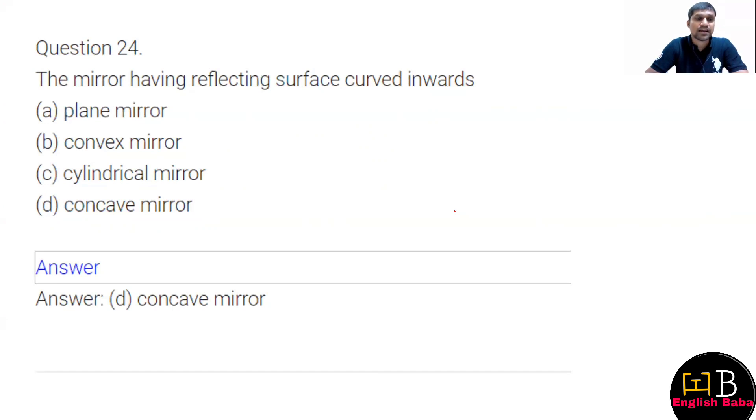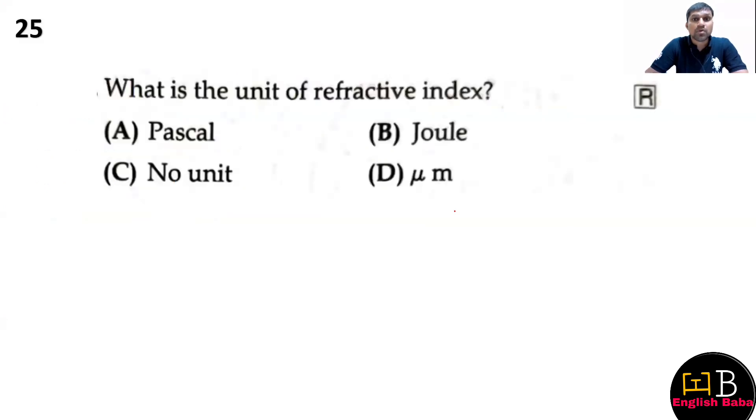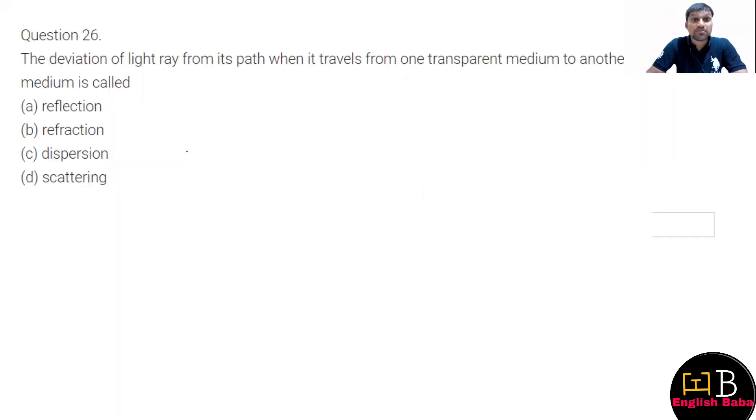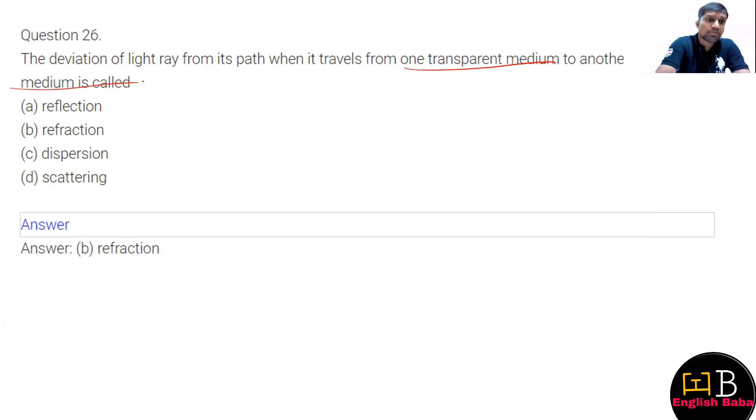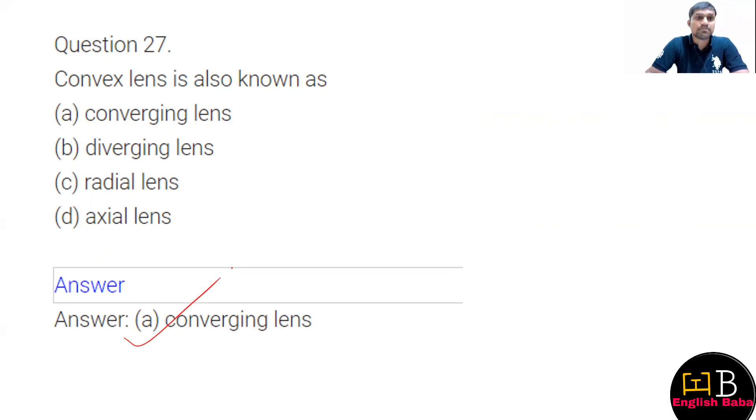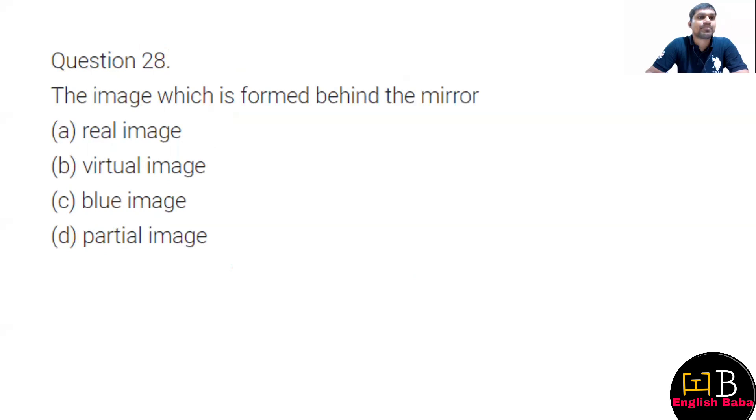Next question: what is the unit of refractive index? It has no unit because it is a comparison - similar quantities get cancelled. When you have similar quantities, then you have no unit. Next question: deviation of light ray from its path when it travels from one transparent medium to another transparent medium. Convex lens is converging lens and concave lens is diverging lens. That you have to remember. Concave mirror is converging mirror.